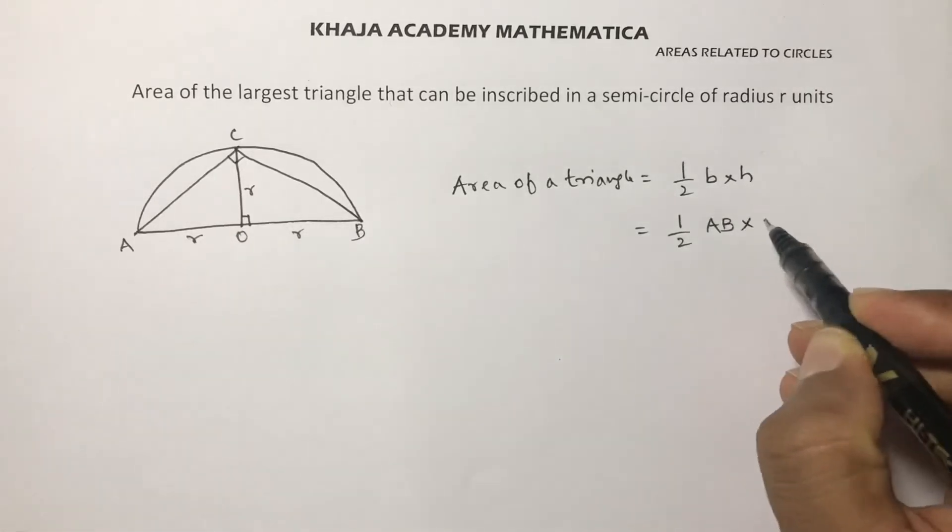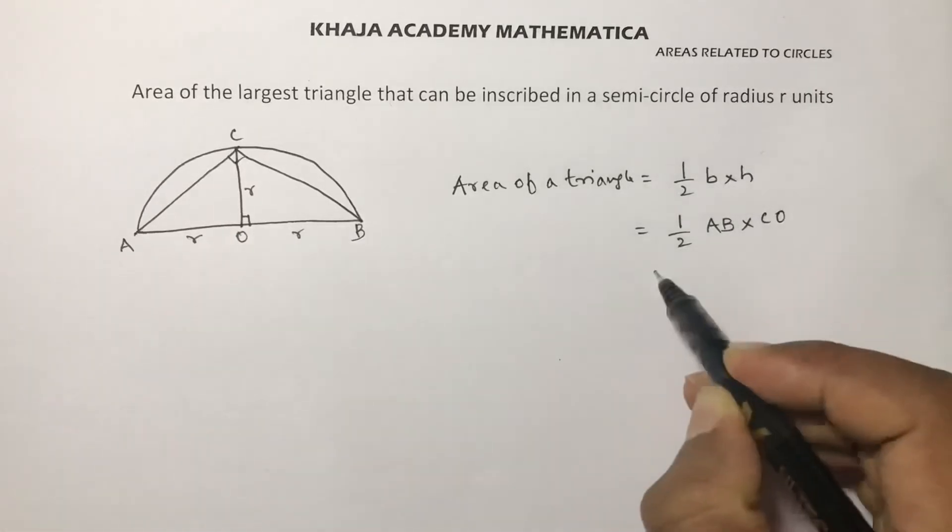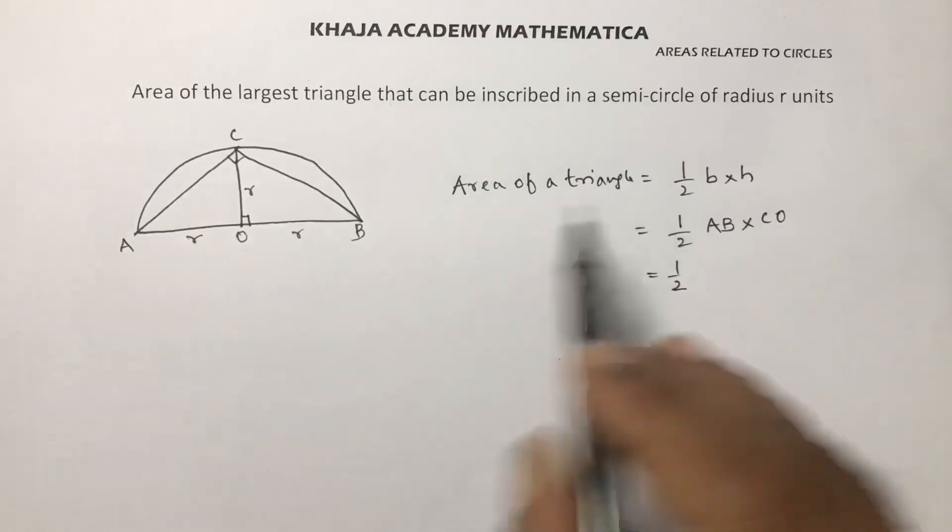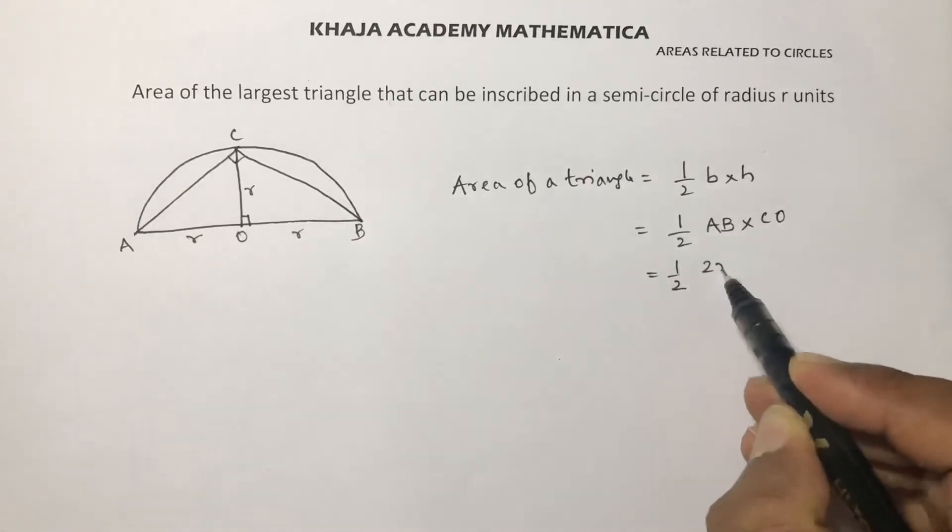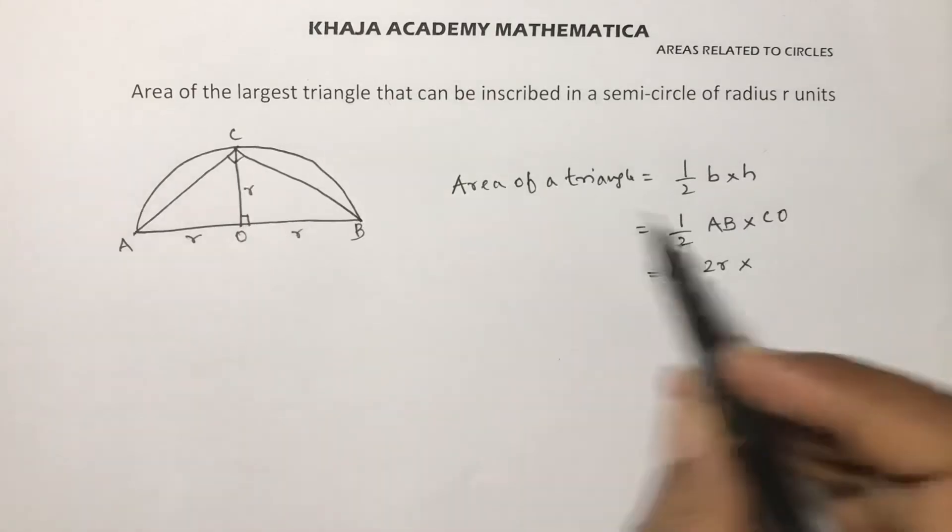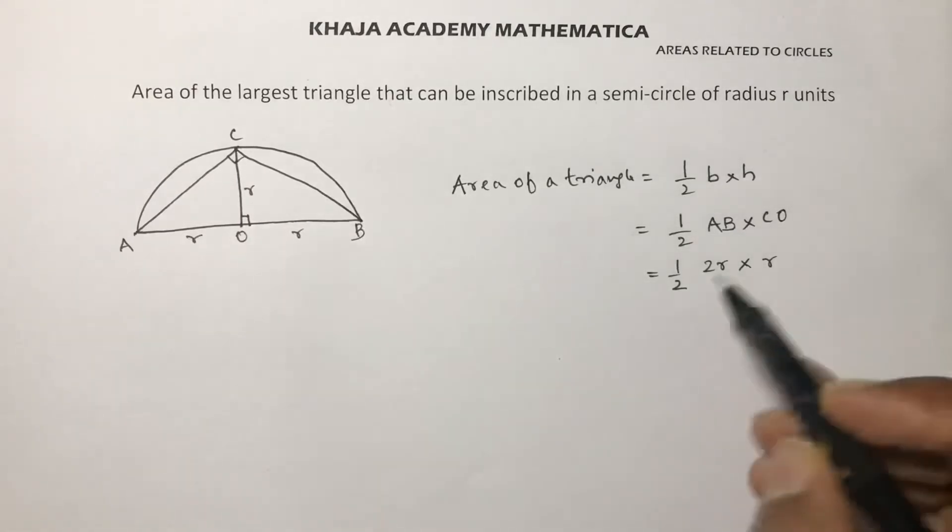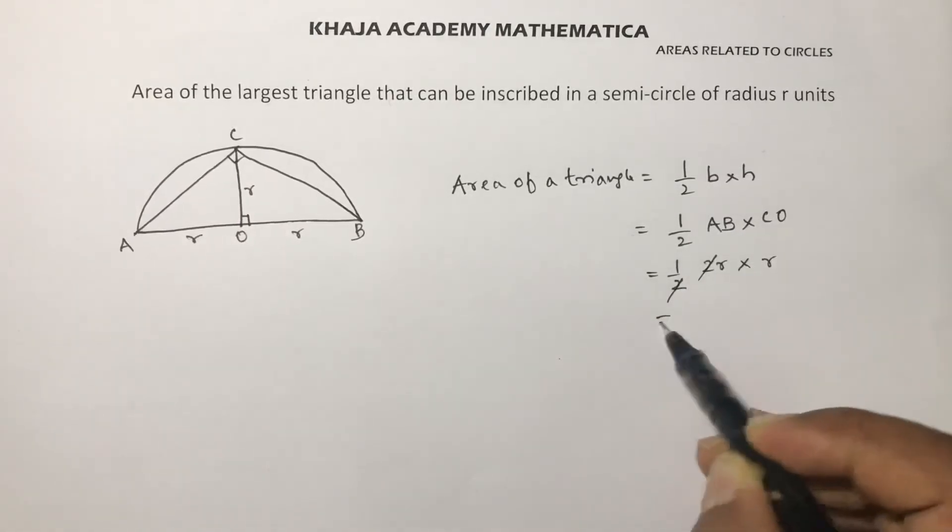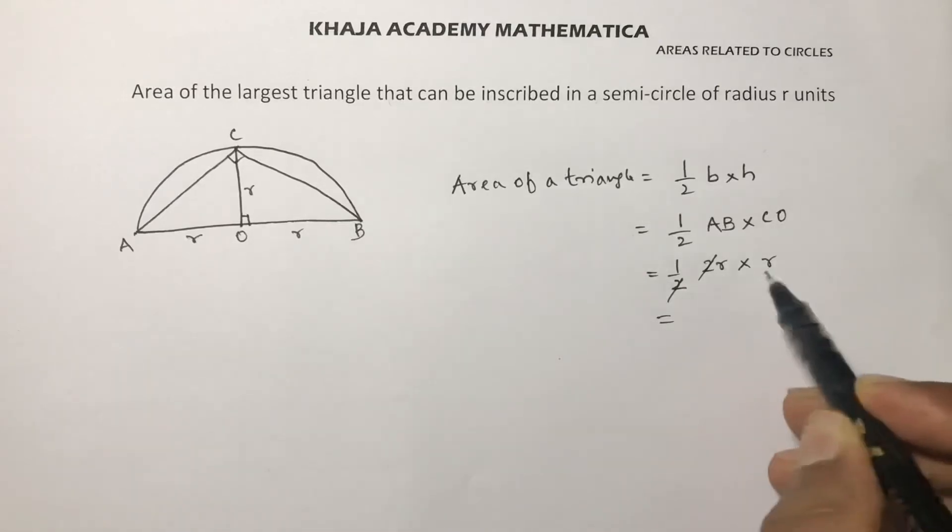And height is CO or OC. So, half times AB—AB is a diameter, that is 2 times the radius—and CO is the radius. So 2 and 2 cancel, giving R times R.